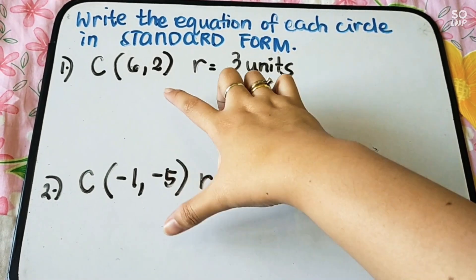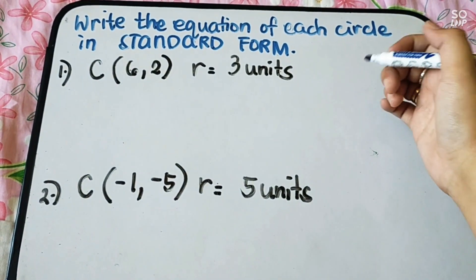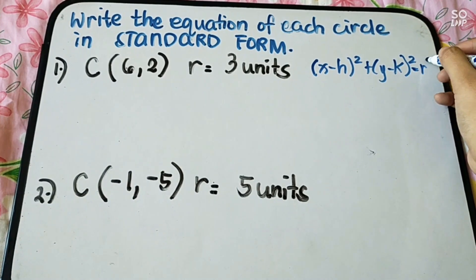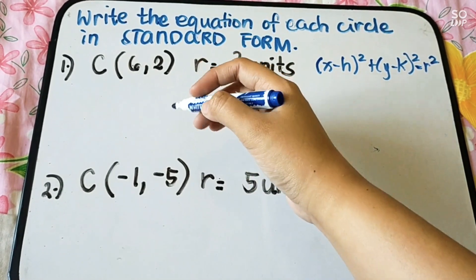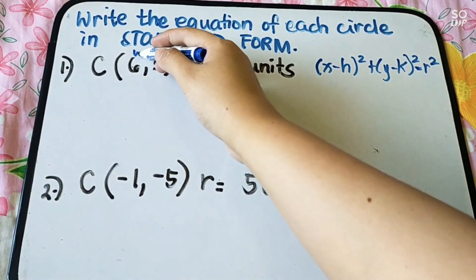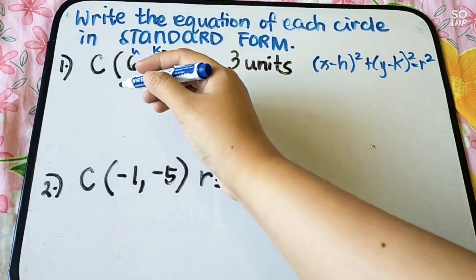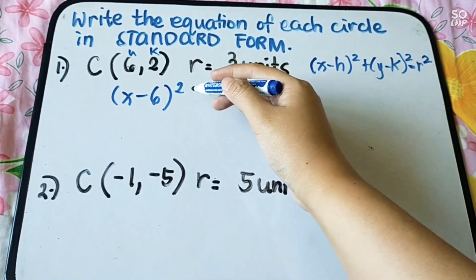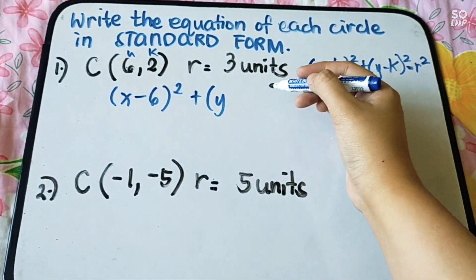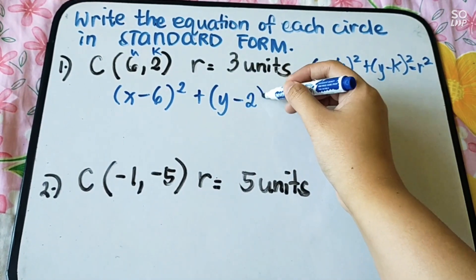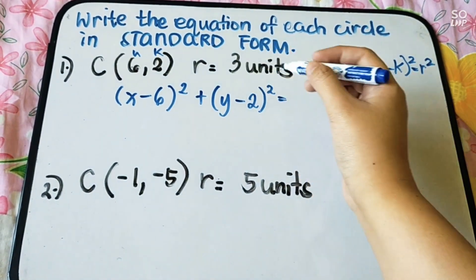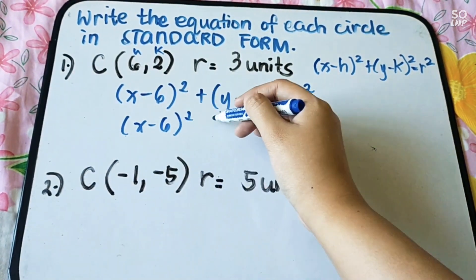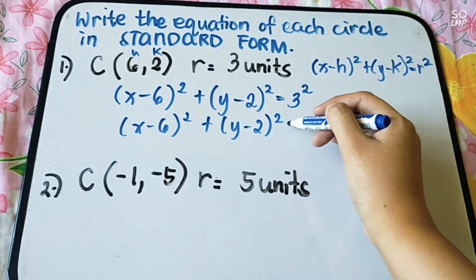Write the equation of each circle in standard form, given the center and radius. The standard form is: (x minus h) squared plus (y minus k) squared equals r squared. For center (6, 2) and r equals 3, substitute: (x minus 6) squared plus (y minus 2) squared equals 3 squared, which simplifies to: (x minus 6) squared plus (y minus 2) squared equals 9. This is your standard form.